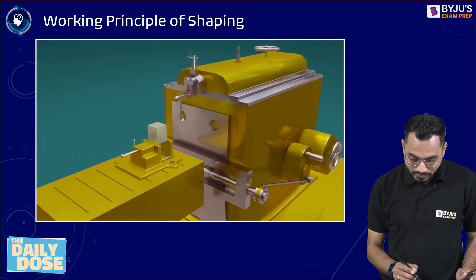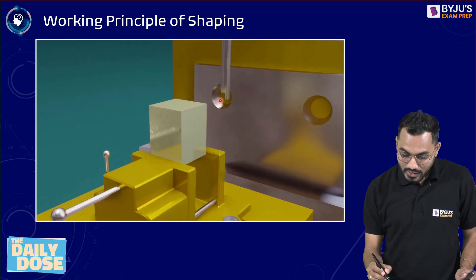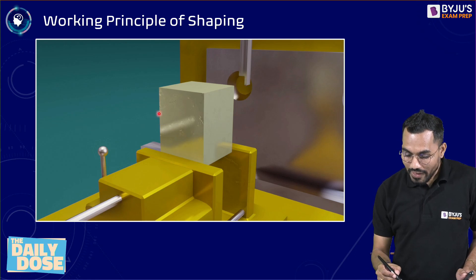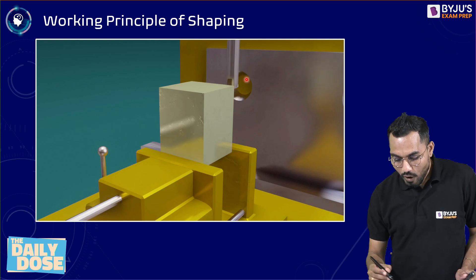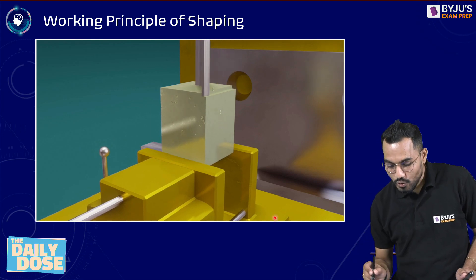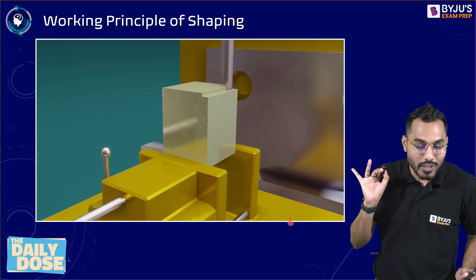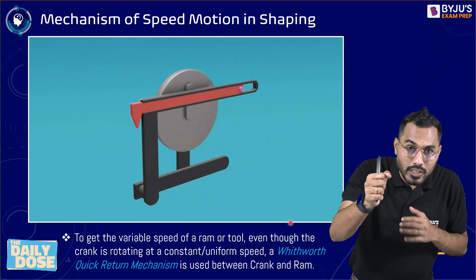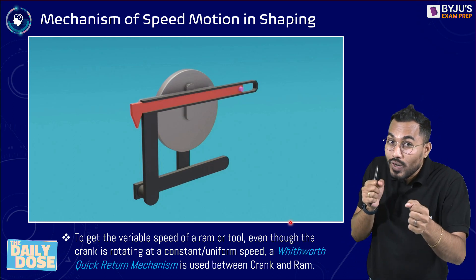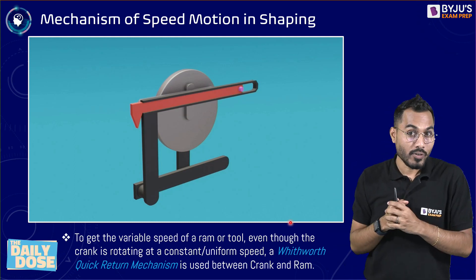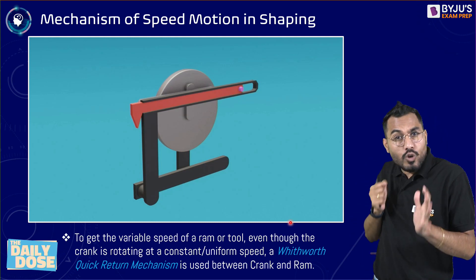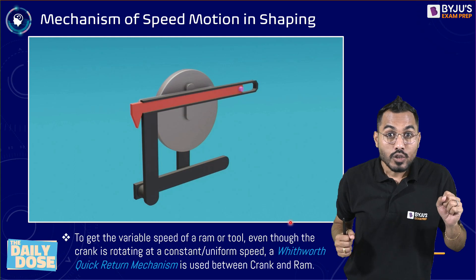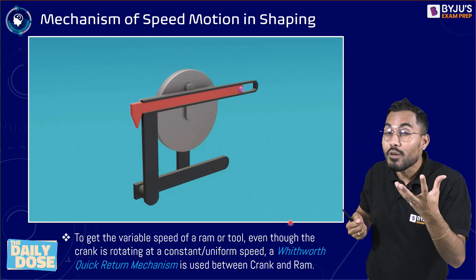Let's observe the animation once again. The tool comes closer to the workpiece; the workpiece is stationary. Forward stroke is cutting, return is idle. Feed motion is given to the work table. During cutting, the tool is in contact with the workpiece, so it must move at an optimum velocity. When returning, the tool is not in contact with the workpiece and no machining occurs.